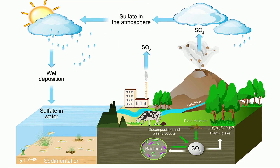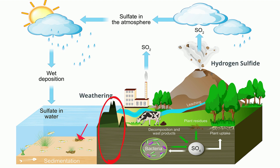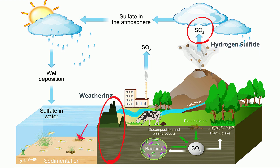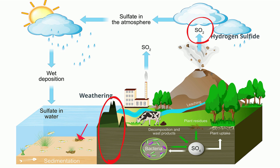First, sulfur reserves are found in the lithosphere and are released by weathering. In addition, hydrogen sulfide and sulfur dioxide gas is released into the atmosphere by volcanic eruptions, hot springs, and the decay of biological material in swamps and bogs.